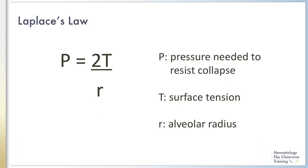Laplace's law provides a mathematical explanation of why surfactant is critical in maintaining alveolar expansion and preventing collapse. In this relationship, P represents the distending pressure required to resist collapse, T is the surface tension, and R is the radius. Laplace's law states that the pressure required to resist collapse of a spherical structure is directly proportional to the surface tension and indirectly proportional to the radius.